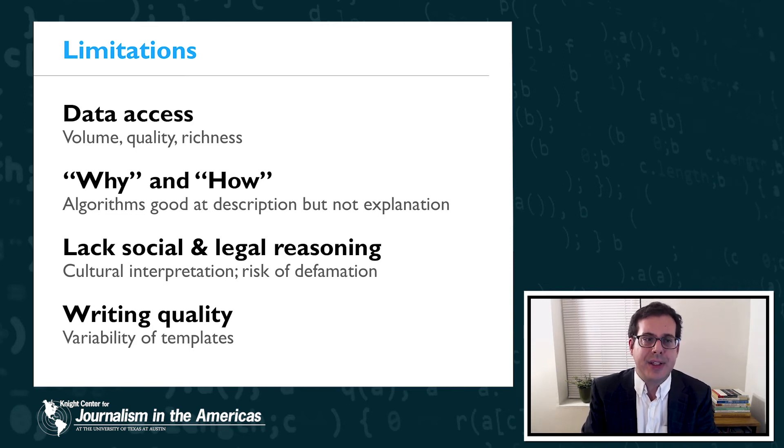Another limitation is what I would call why and how. Explaining why or how something happens often requires higher level cognition and ability to interpret, to think about causal reasoning. Why did one thing cause another thing? And these explanations also often require some degree of social understanding. People generally tend to be better at these tasks because they can draw on context, they can draw on common sense, and develop rational explanations that way.